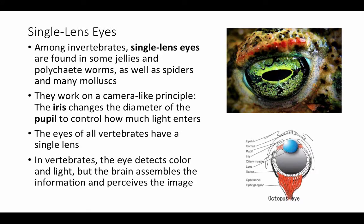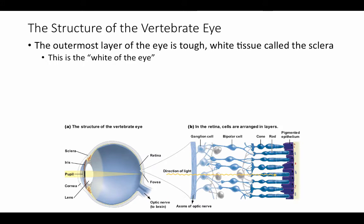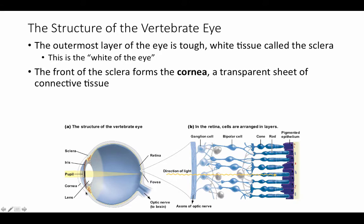Thinking about vertebrates: the eye detects color and light, but it's actually the brain that assembles the information and perceives an image. Basically, what we see with our eyes is just color and light — it's your brain that actually forms the image. Let's take a look at the anatomy of the vertebrate eye. The outermost layer is a protective covering of tough white tissue called the sclera, which is the white of the eye. The front of the sclera forms the cornea, a transparent sheet of connective tissue.